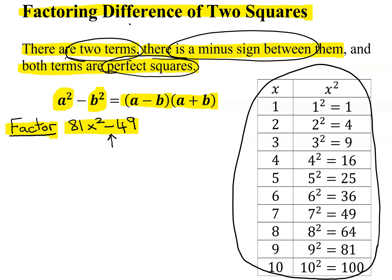You should definitely know these numbers here are all perfect squares. You should be able to recognize them fairly quickly. So are our numbers over here perfect squares?